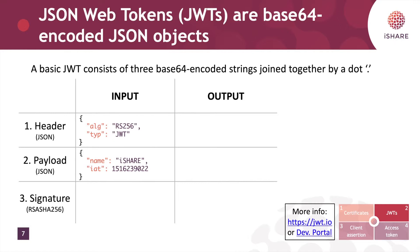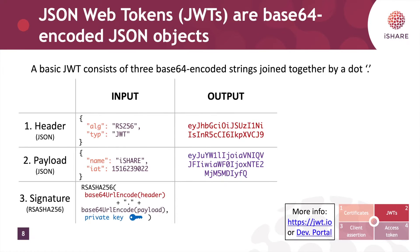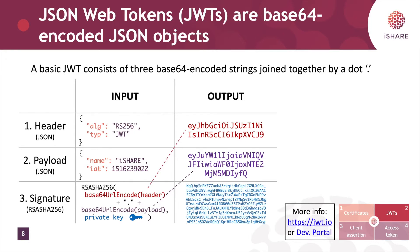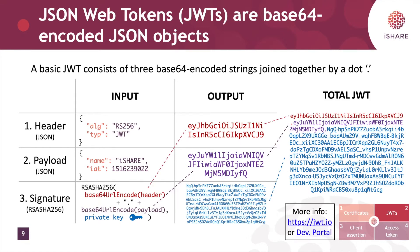So the input will be first two JSON objects and then we only need to add a signature. The first two inputs are encoded to base64 strings, and you can see the output on the right. You can try this yourself by decoding the strings on the right and you will see that they turn out to be the original strings on the left. The signature is based on that output. It takes some algorithm defined in the header — here we defined RSA SHA256 — and as input it will take the output of part one, add a dot, then take the output of part two, and sign that using the private key of a certificate. The output will again be a base64 encoded string. If we glue these three outputs together with dots, that forms the total JSON web token.